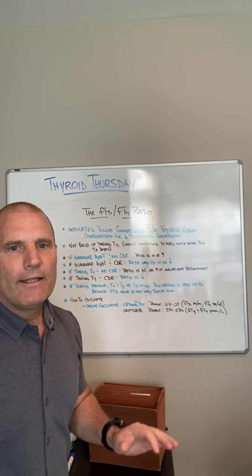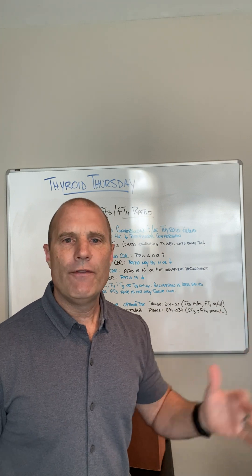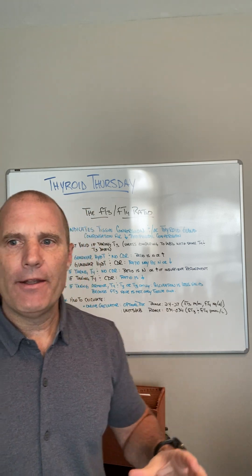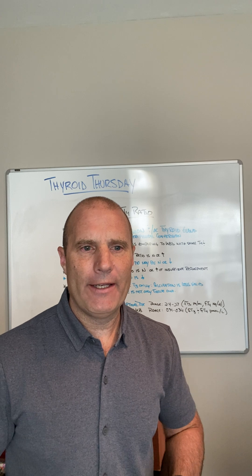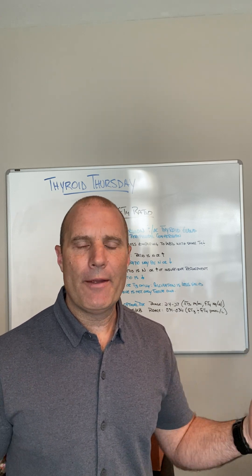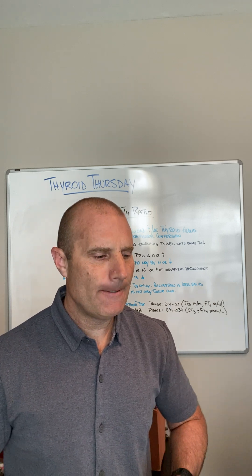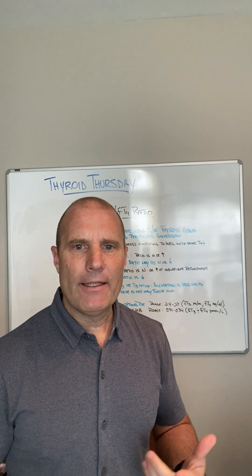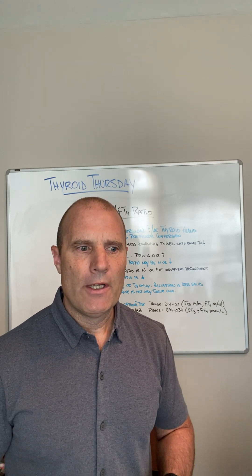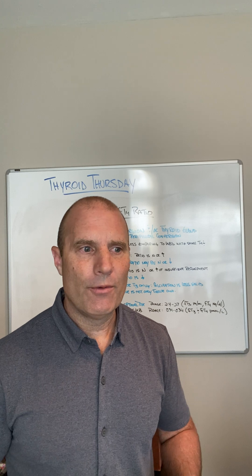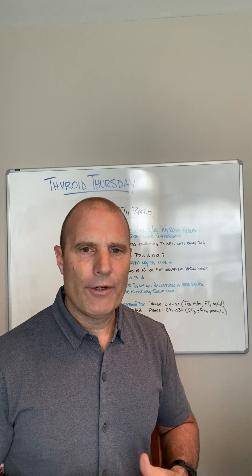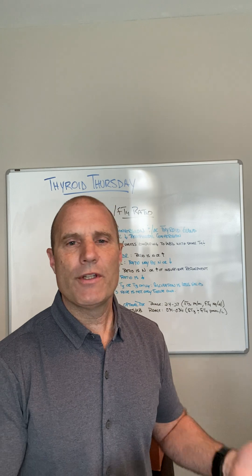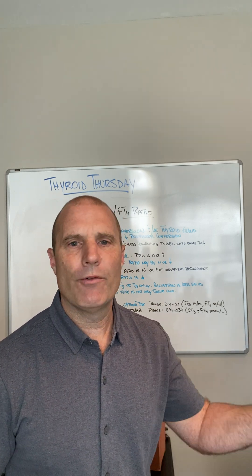What this ratio indicates is the conversion of T4 to T3 at the tissue level, and potentially thyroid gland compensation. Keep in mind that most of the T3 in the body is not made by the thyroid gland. On average, the thyroid gland makes about five micrograms per day, maybe up to ten depending on the person. The rest of the roughly 30 micrograms is made by the kidneys, the liver, and all other tissues that have deiodinase 2, converting T4 to T3. We think about the liver doing most of it — deiodinase 1 — and the kidneys do a little bit as well.